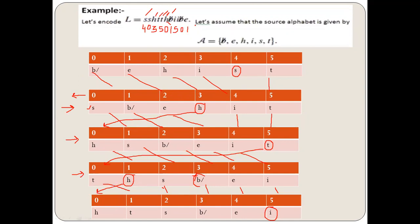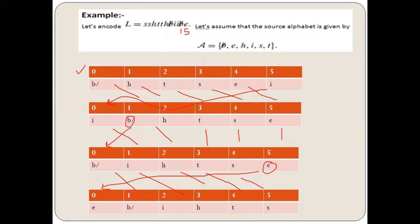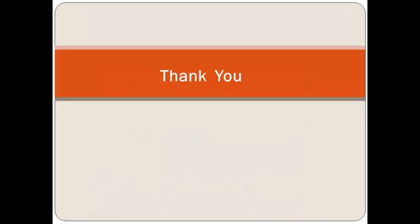The final output we get is: 4, 0, 3, 5, 0, 1, 5, 0, 1, 5. You can see the number of zeros — these represent the recurring symbols, the long run symbols. In this way, compression is better with MTF. This is how we encode using MTF — Move to Front. I hope you have understood this particular part. Thank you.